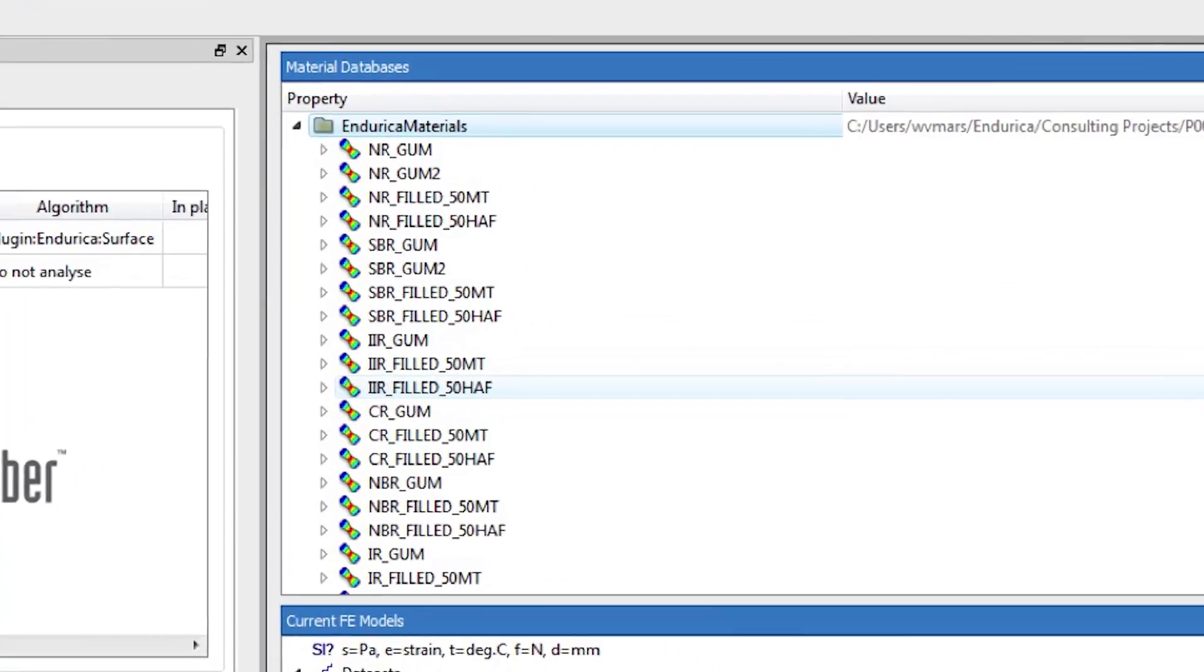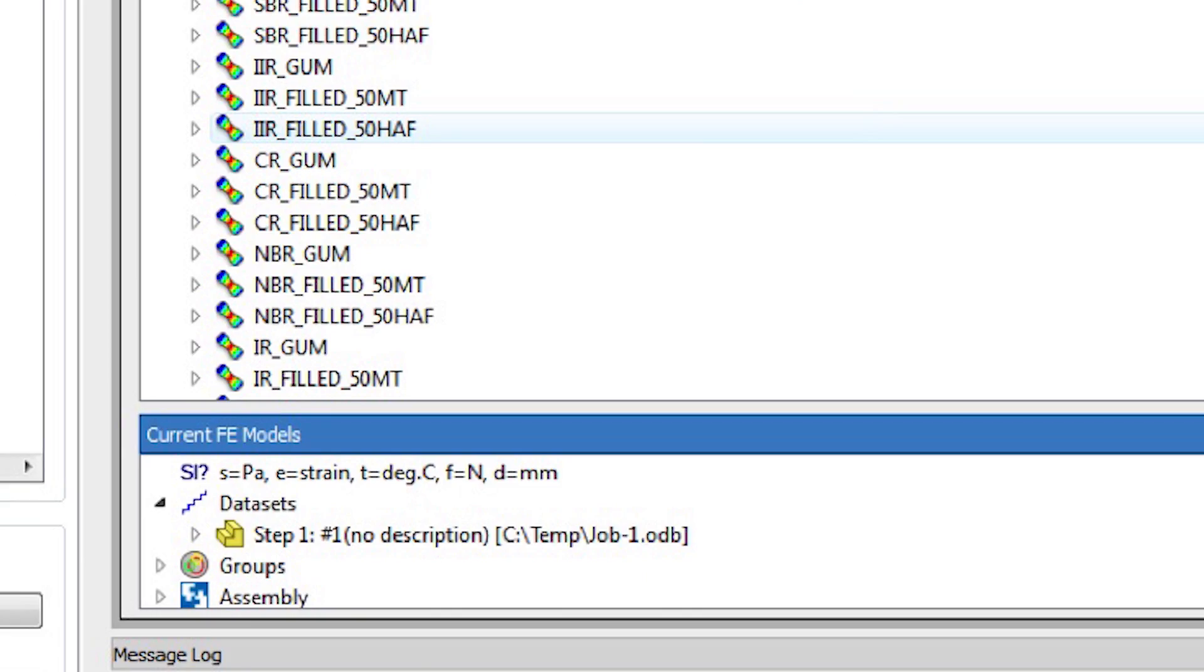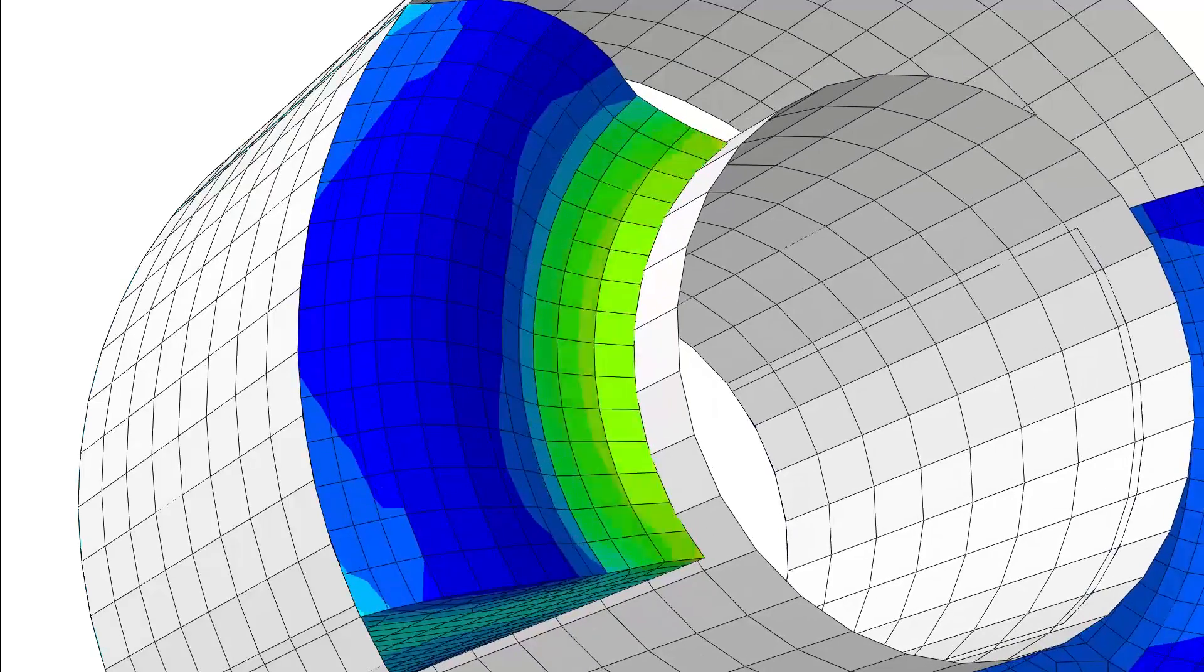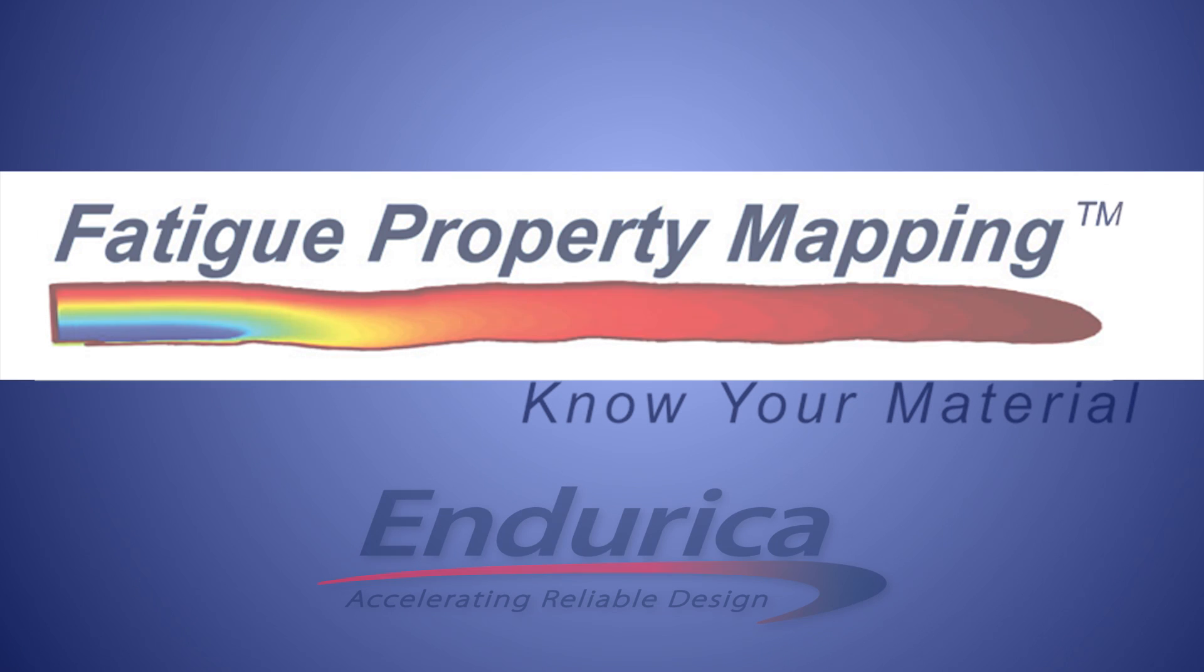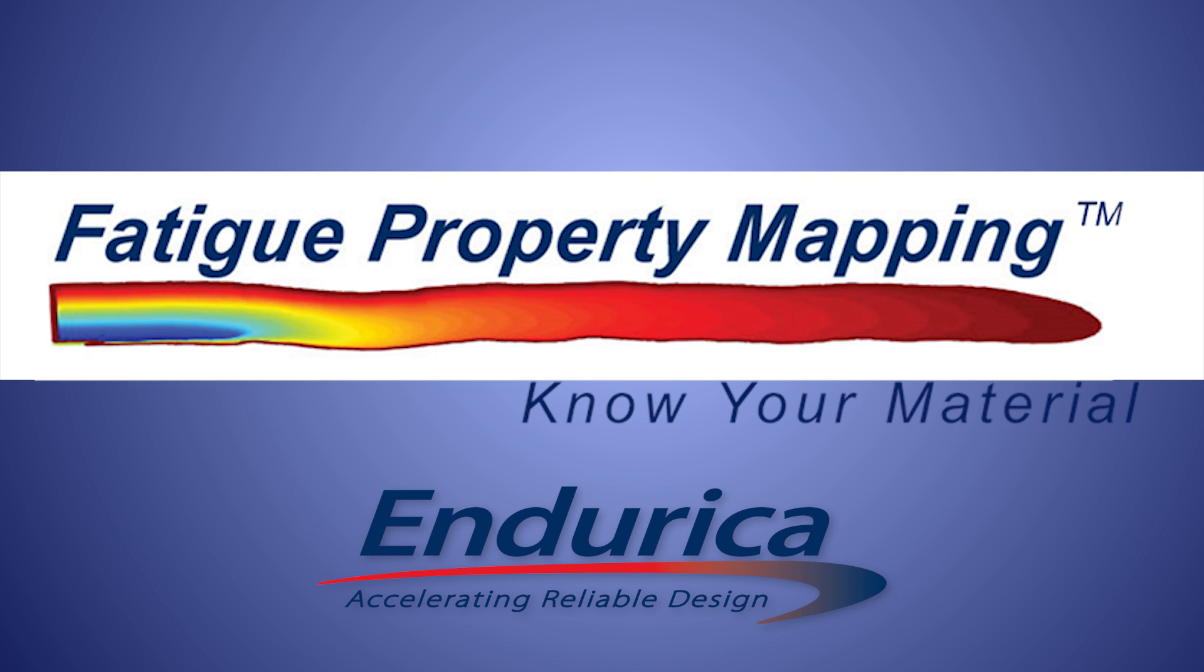They give you parameters that are ready right out of the box to use with our numerical fatigue solvers FE-safe rubber and Endurica CL. Get durability right before you mix and mold with Endurica's fatigue property mapping.